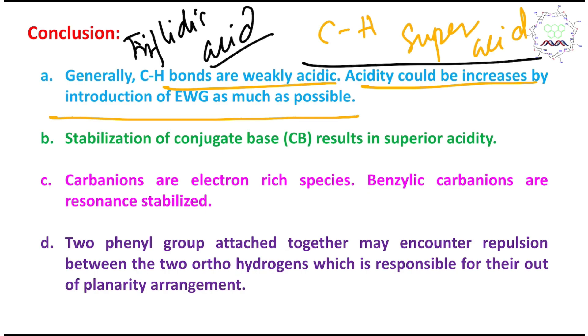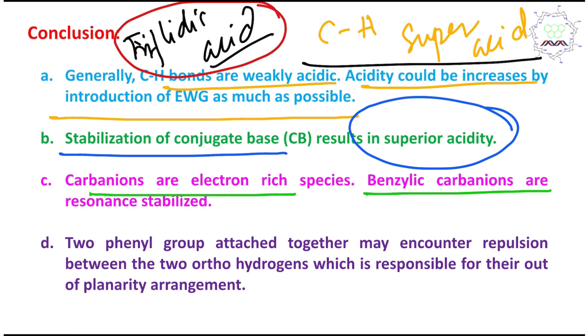Next point is stabilization of the conjugate base is essential and it results the superior acidity means more the conjugate base is stabilized more is the acidity and in case of super acid means this triflic acid, the conjugate base is extremely stabilized because of resonance. That's why it behaves as a super acid.